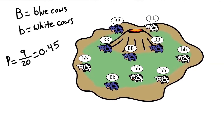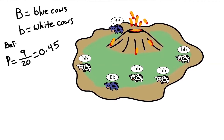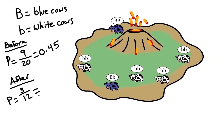Let's say there is a volcano on this island and it erupts — a random natural disaster. Lava spews everywhere, hits some of the cows, and those cows die. After the disaster, there are three dominant alleles left out of 12 alleles total, giving a new allelic frequency of 0.25 or 25%. This is different from natural selection because it didn't matter if you were a blue cow or a white cow — only how close you were to the volcano when it erupted.